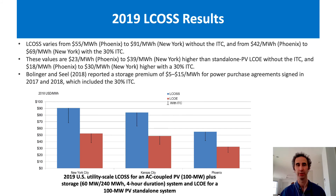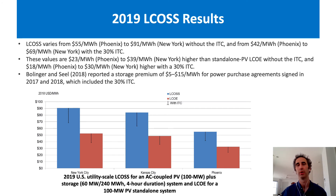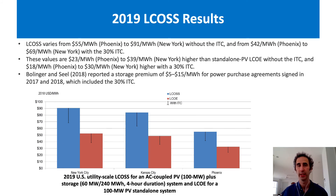How does this compare to the real world? According to an LBL report published by Bollinger and Seel in 2018, they reported that storage premiums for a PV system in terms of the PPA add $5 to $15 per megawatt hour to the price for systems built in 2017 and 2018. Obviously, those systems would include a 30% ITC.